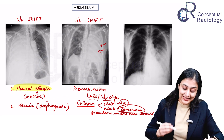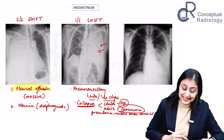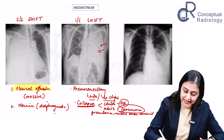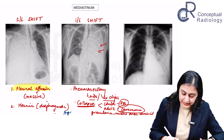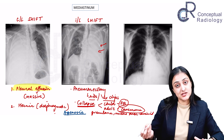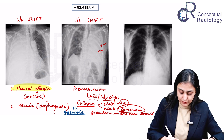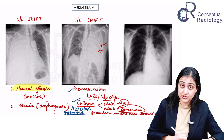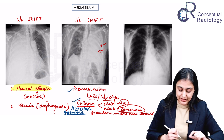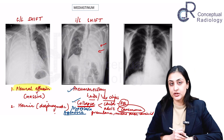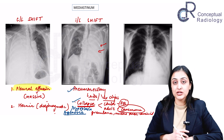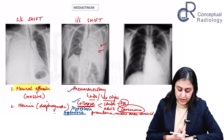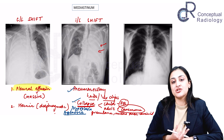Two other important differentials to keep in cases of ipsilateral shift are pulmonary agenesis and pulmonary hypoplasia. These are considered lower down on the list, but are important especially in exam settings. A CT can really help confirm these when the pulmonary arterial trunk is found to be absent, which confirms agenesis or hypoplasia.